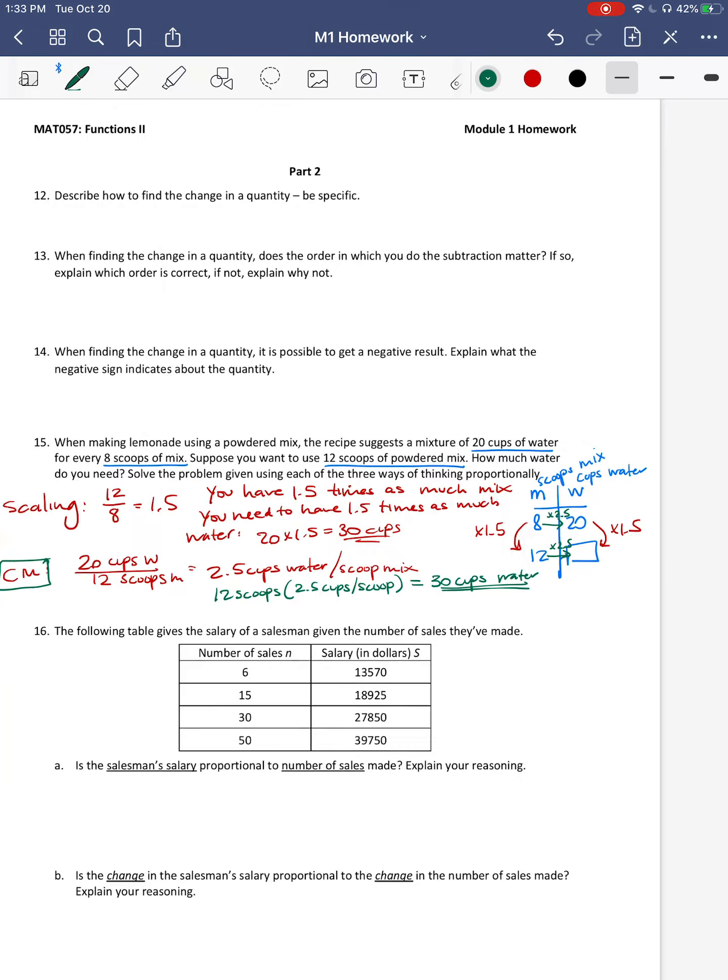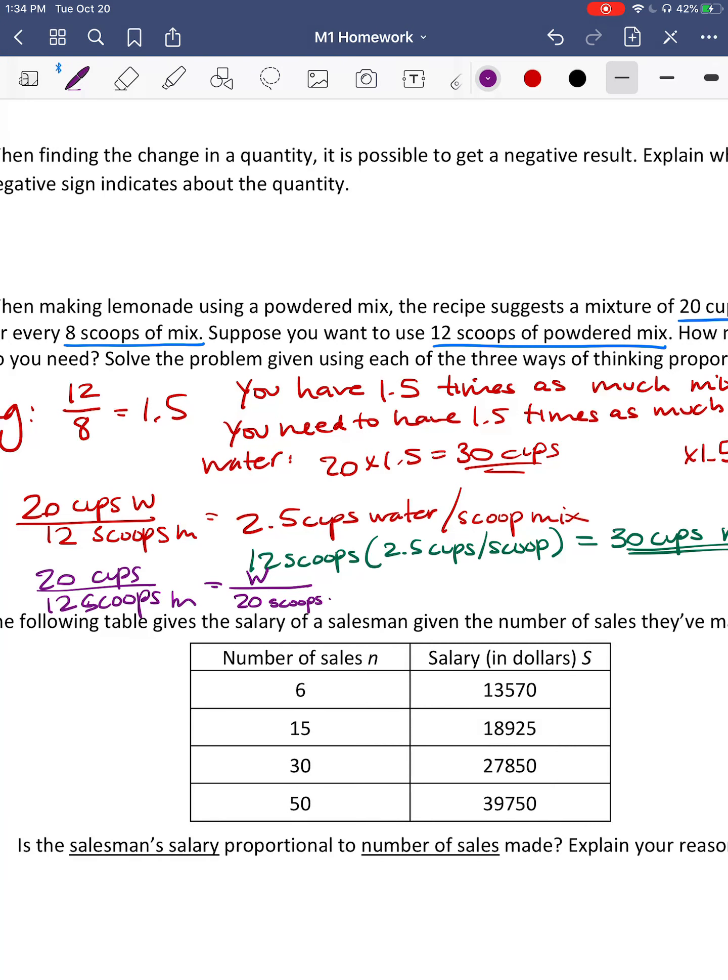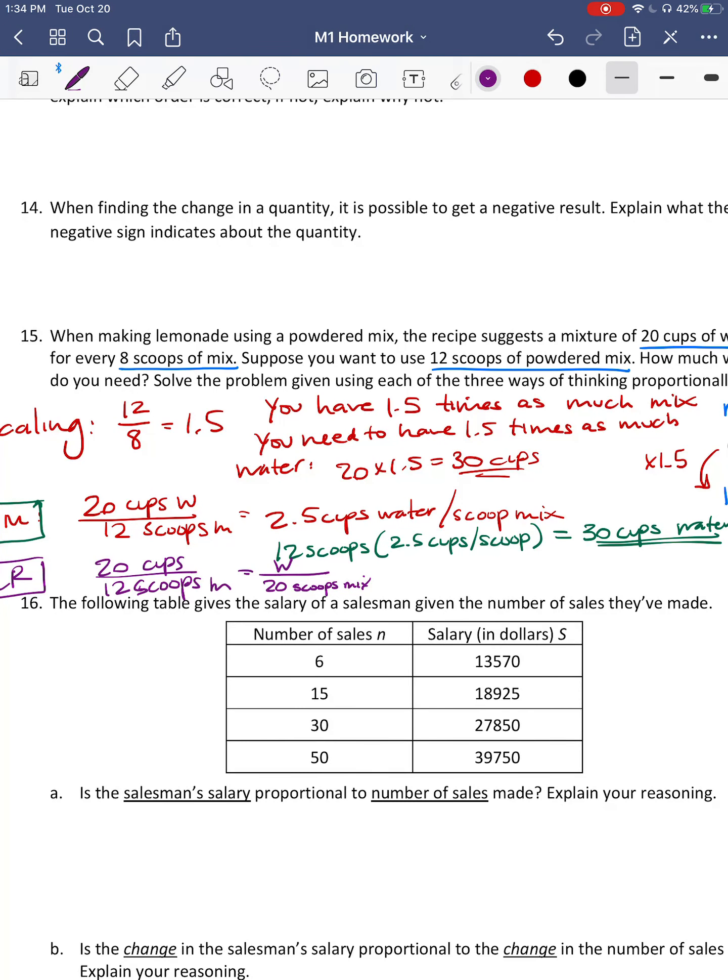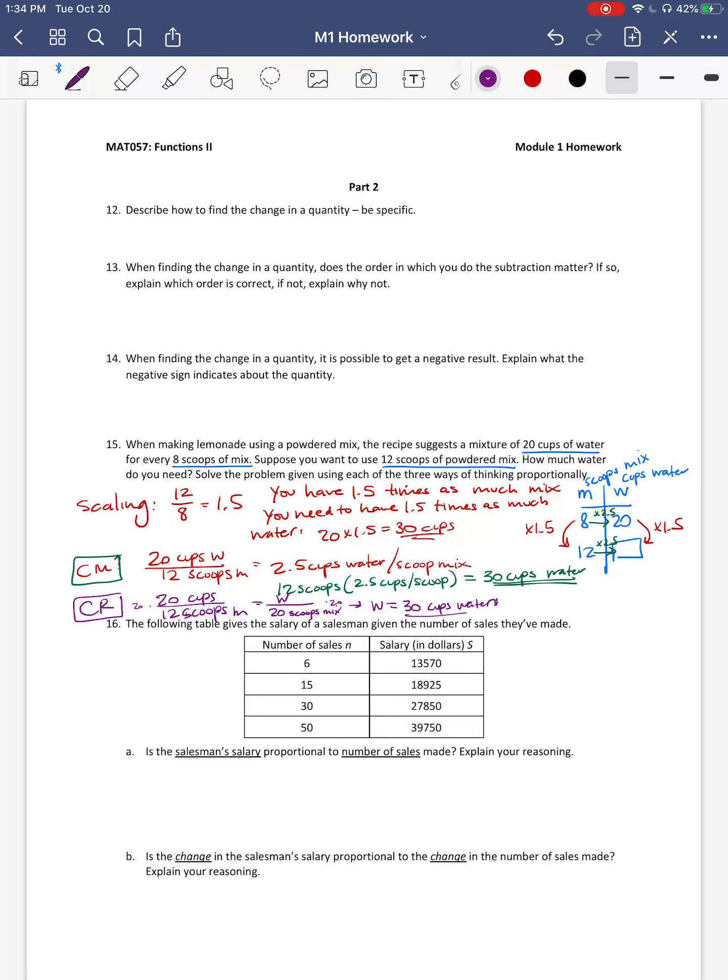And then finally, I'll go purple for the constant ratio. I would set that up like 20 cups of water over 8 scoops of mix is equal to, essentially we could say like w, however many cups of water to 12 scoops of mix. Probably the easiest way to solve for this is just multiply both sides by 12 to get the 12 out of the denominator. And when you do that, you're going to get w equals 30 cups of water. So no matter which way you solve it, you should get 30 cups of water as your solution.